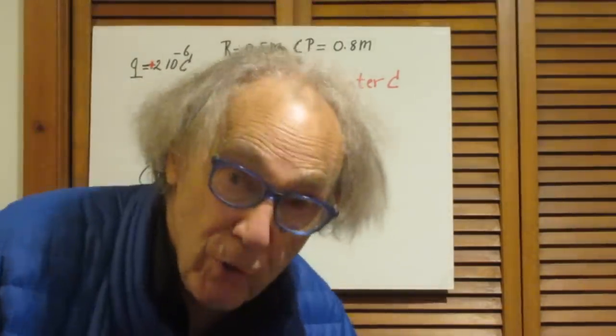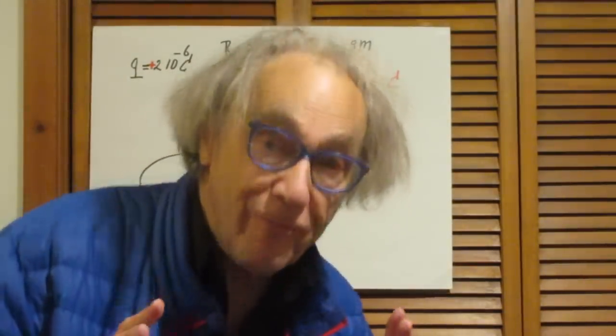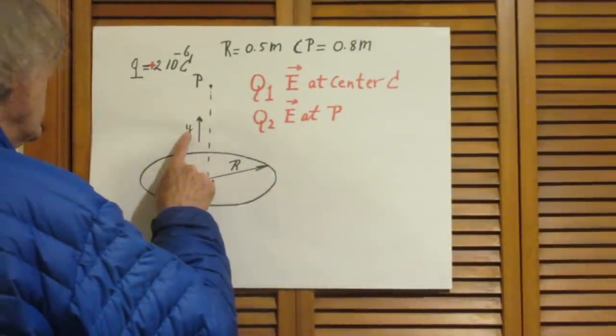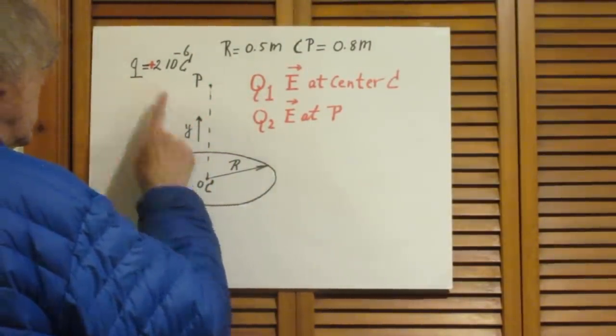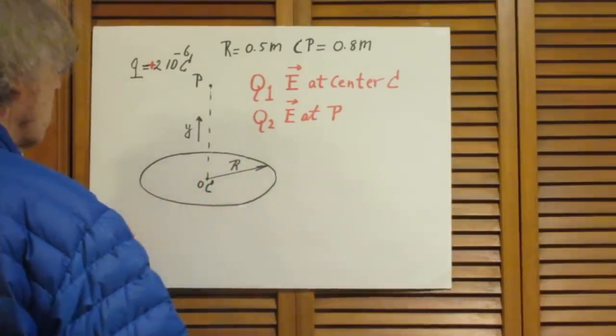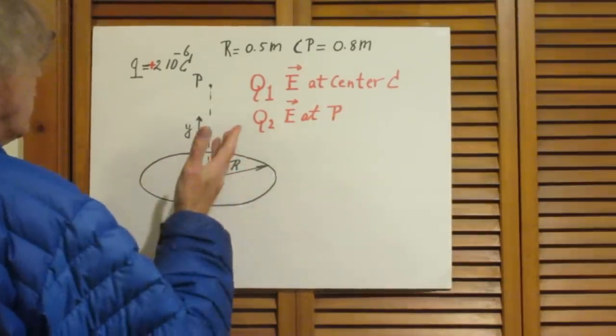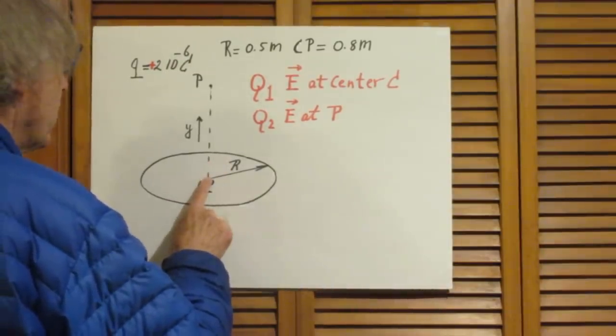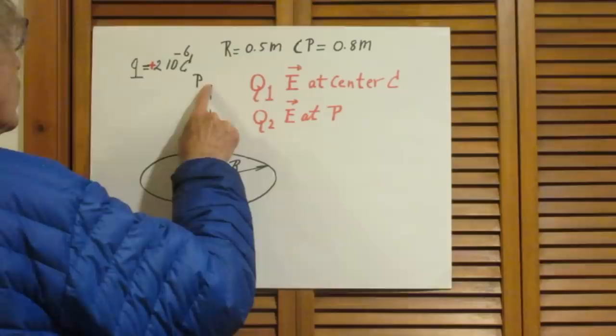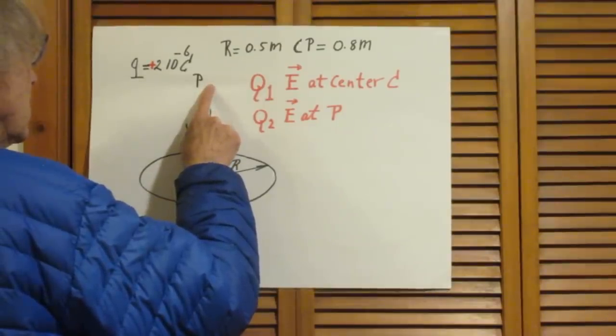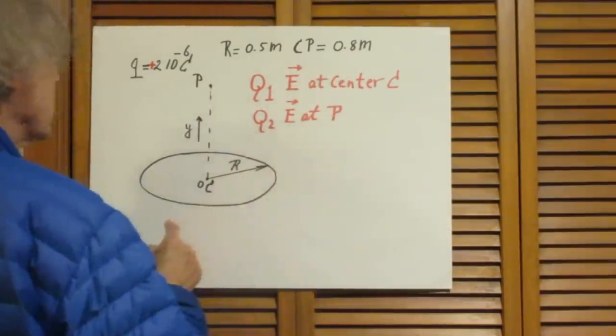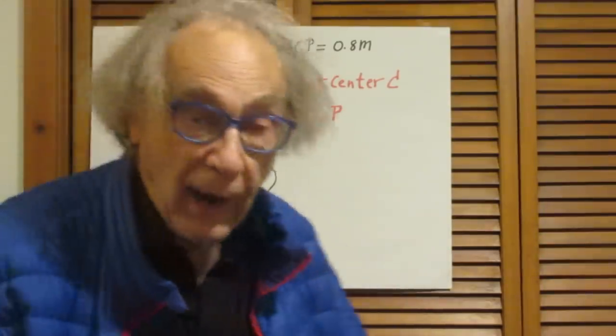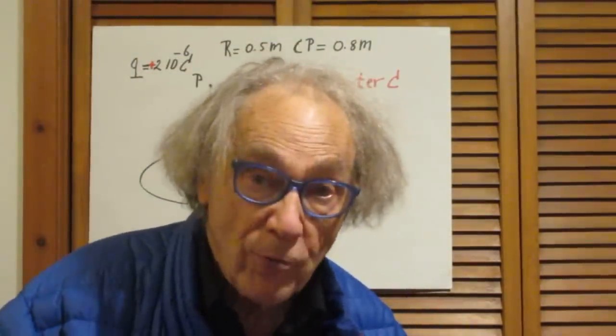My advice to you is to solve the problem first in terms of y, q, and R. Then you get a result for this point, which is y = 0, and you get the result for this point, which is y = 0.8 meters, with this R and with this q. Those are the numerical answers that I want to see.